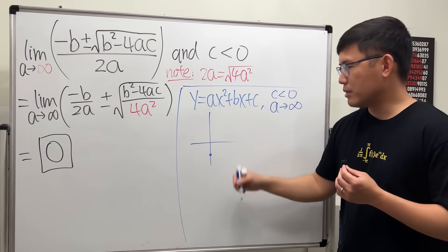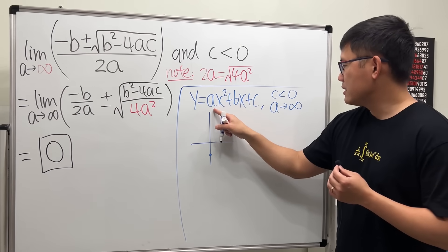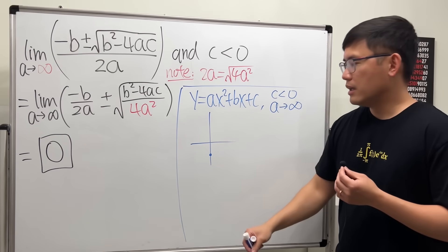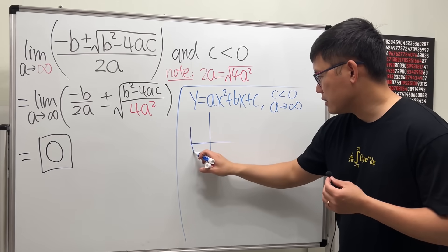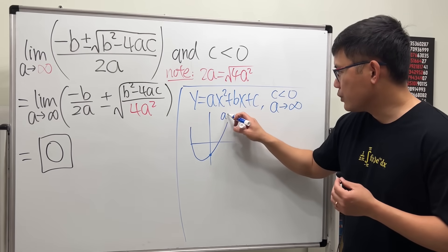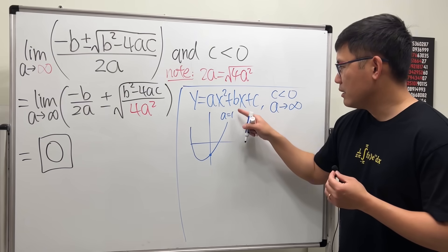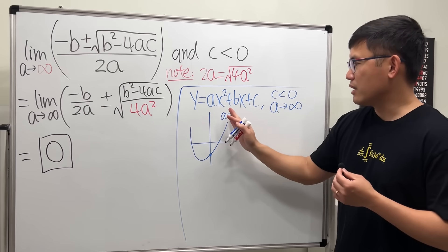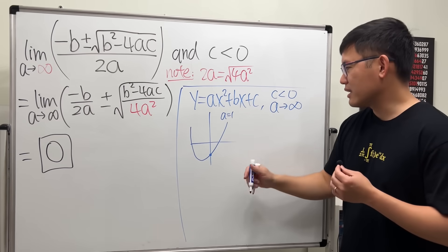Because b can be any real number, if a is let's say one or so, it opens up, so it could have been like this. But if a equals one and b is positive, then you can get the vertex somewhere to the left, somewhat like that.